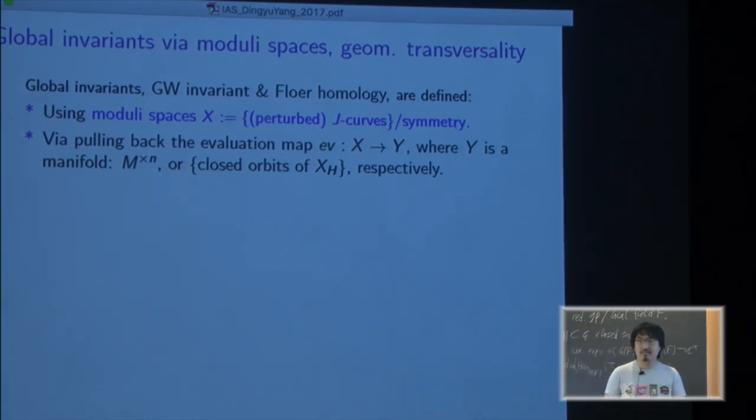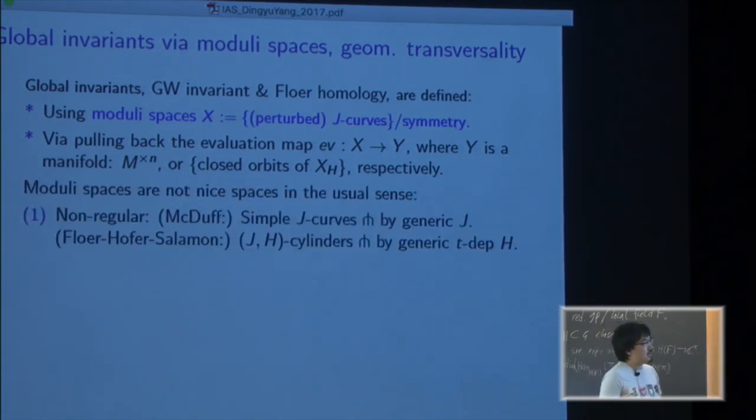Okay, so we have some global invariants and there's some way to achieve geometric transversality. You define them using moduli spaces - basically consider space of J-holomorphic curves quotiented out by the symmetry. You define the counting by pulling back the evaluation map either at the marked points or over the infinity of the closed orbit into those manifolds. But the moduli space X is not very nice in general. There are two very classical results saying that for the simple curve there's a way to achieve transversality just by changing the geometric structure in the target, like J and H.